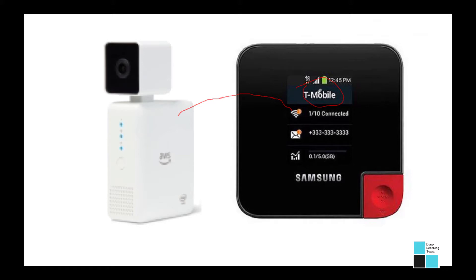If I was at work and I tried to connect to the work Wi-Fi, I would have to contact an administrator and see if they could find my device IP. So there has to be another way — please leave the way to do it in the comments below.